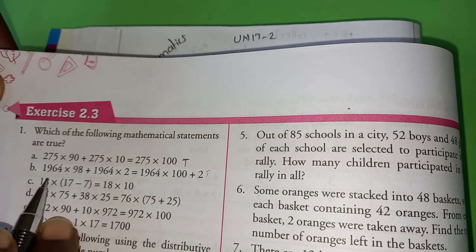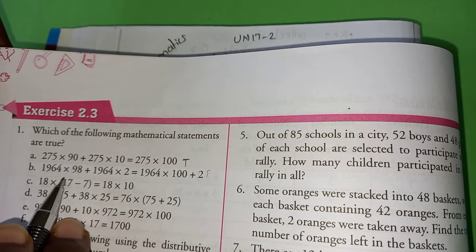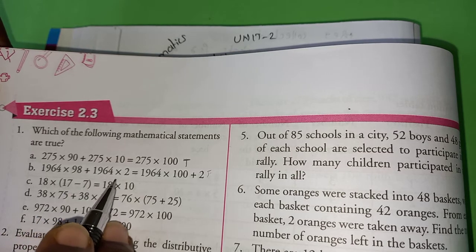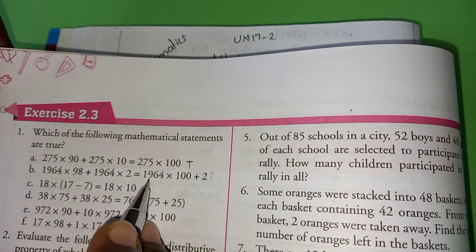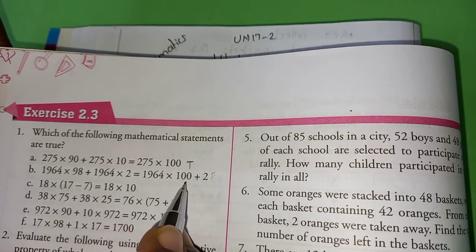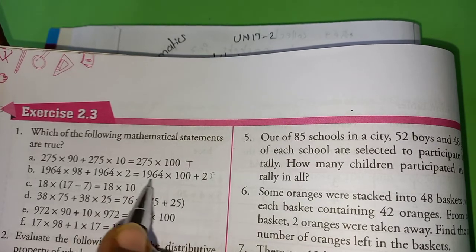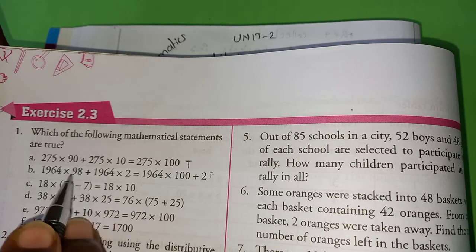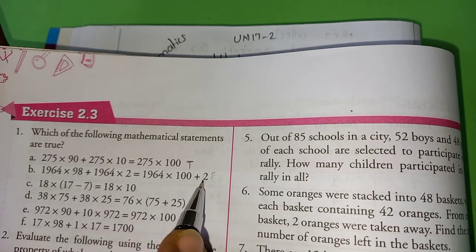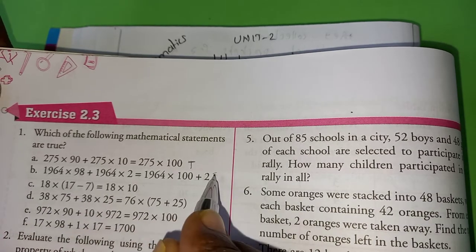When it comes to the second one, 1964 into 98 plus 1064 into 2, 1964 into 100 plus 2. It is false because 1964 into 98 plus 2 is 100, but there are plus 2 here. So this is false.